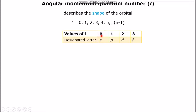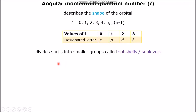The value L equals 0 is given letter S, L equals 1 letter P, L equals 2 letter D, and L equals 3 letter F, continuing alphabetically as the value of L increases. Note that each value of L has a respective shape, so the shape of S is different from the shape of P. Furthermore, L divides shells into sub-shells or sub-levels. These individual letters for each value of L are in fact the individual sub-shells.